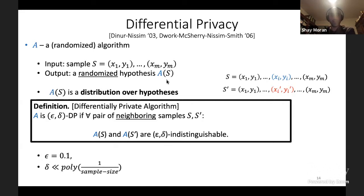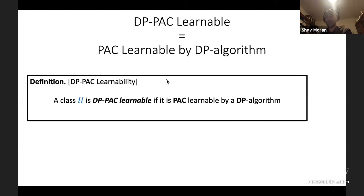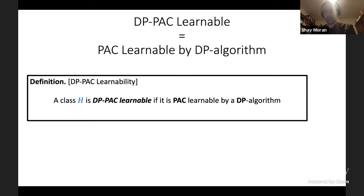A class is learnable in a differentially private way if it is PAC learnable and furthermore the learning algorithm that learns it is differentially private. This is differentially private PAC learnability.